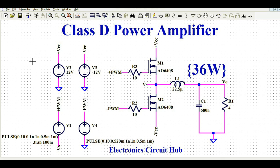Now let us understand the design of the Class D power amplifier — how to design it, how to simulate it in LTspice, and how the Class D power amplifier works. This design I have made for 36 watts. I will run the simulation and show you the different waveforms and the 36-watt power output.